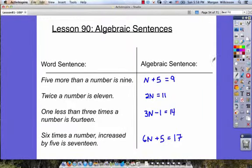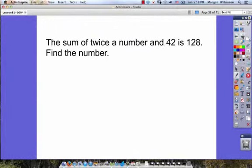We've got one example to look at. Here it says, the sum of twice a number and 42 is 128. We need to find the number. Now in order to find the number, we first need to write out an algebraic sentence. So we need to take this word sentence and turn it into numbers and variables.